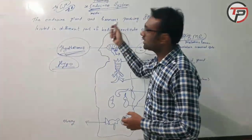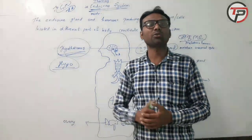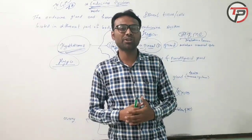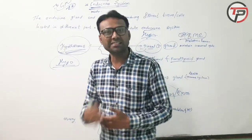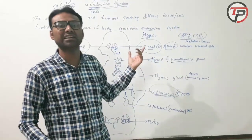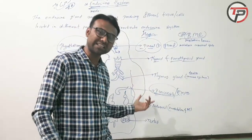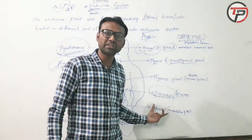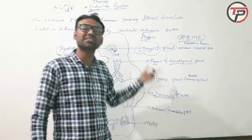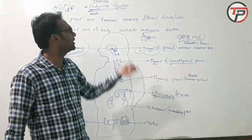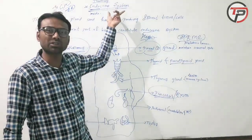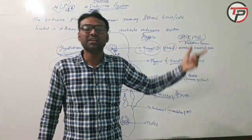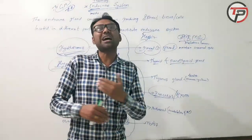So this was a total introduction about the endocrine system — what is the role of the endocrine system in our body and how many glands are there. There are eight endocrine glands present in our body. The difference between endocrine and exocrine has also been covered.